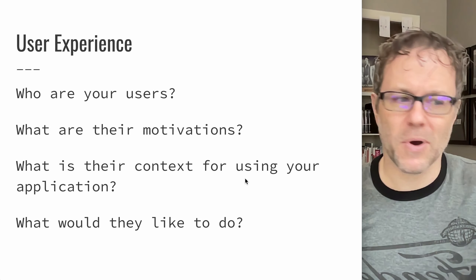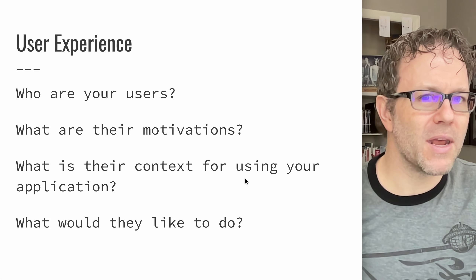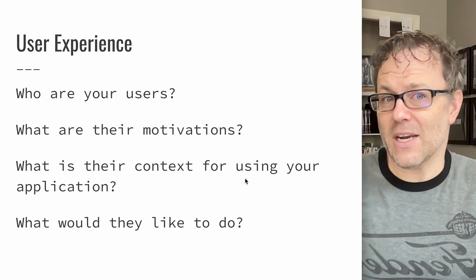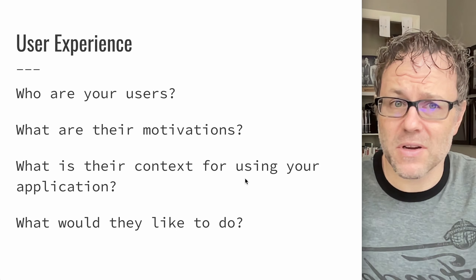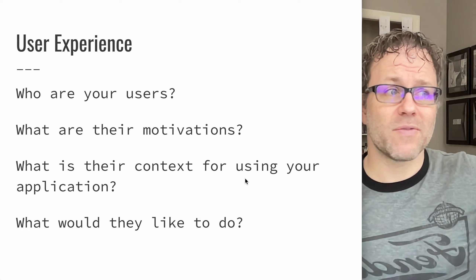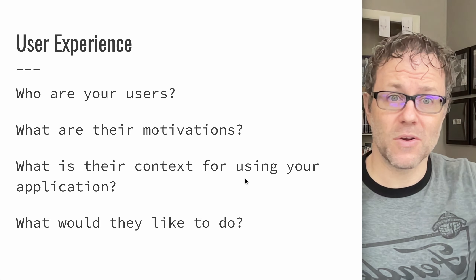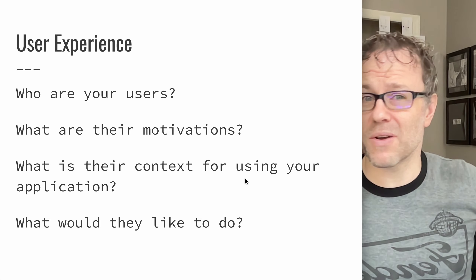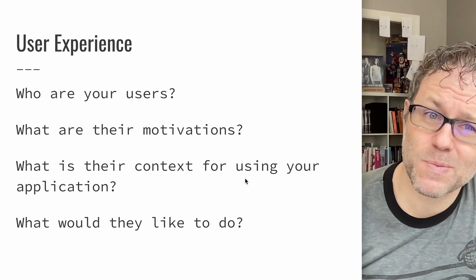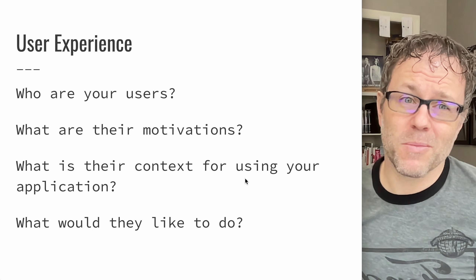They probably think, I got to park somewhere near here. Parking on a particular street may not actually be their goal. It may be: I just need to find a good parking space somewhere near where I'm looking. So you may have to apply multiple predictions for multiple locations. This user experience may not just be using your model.